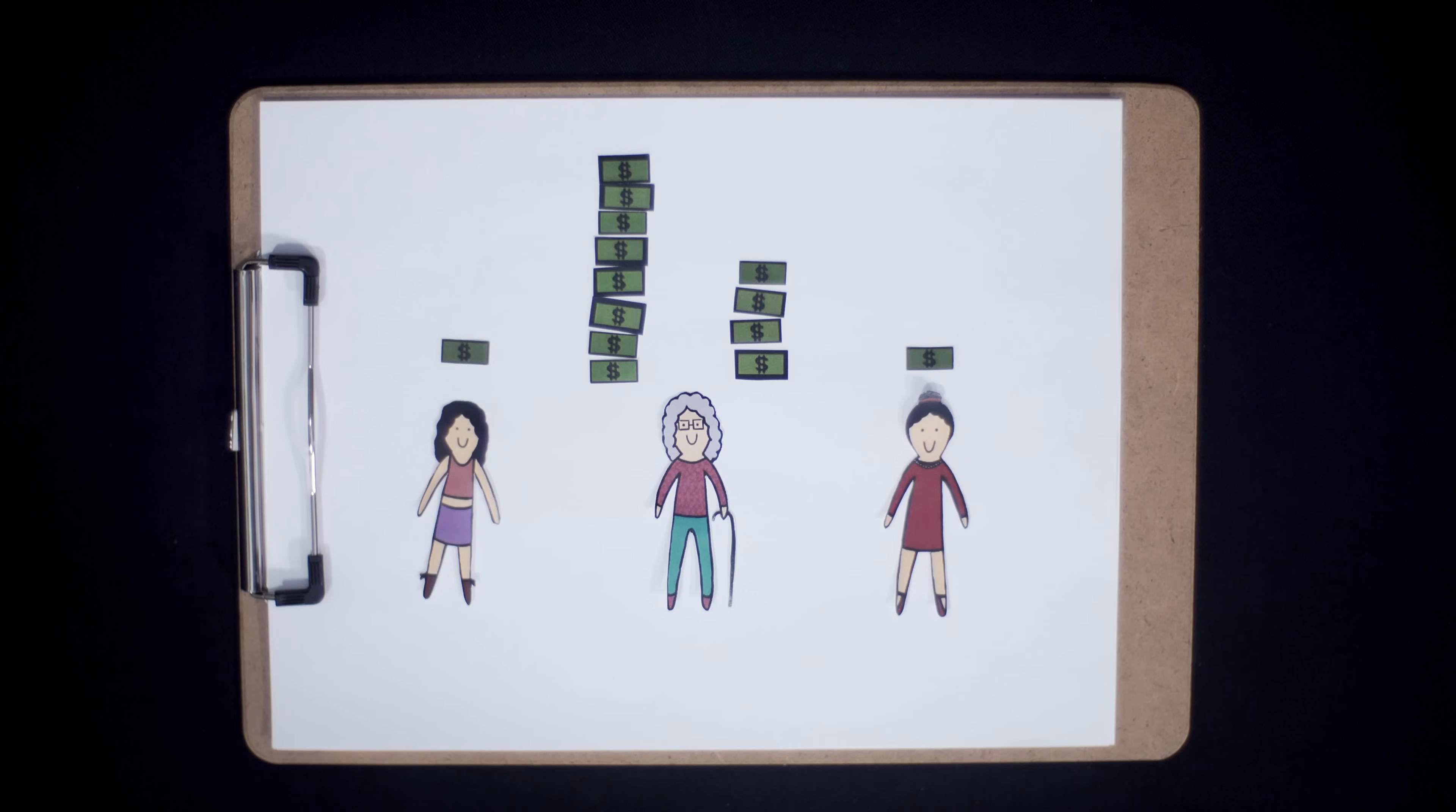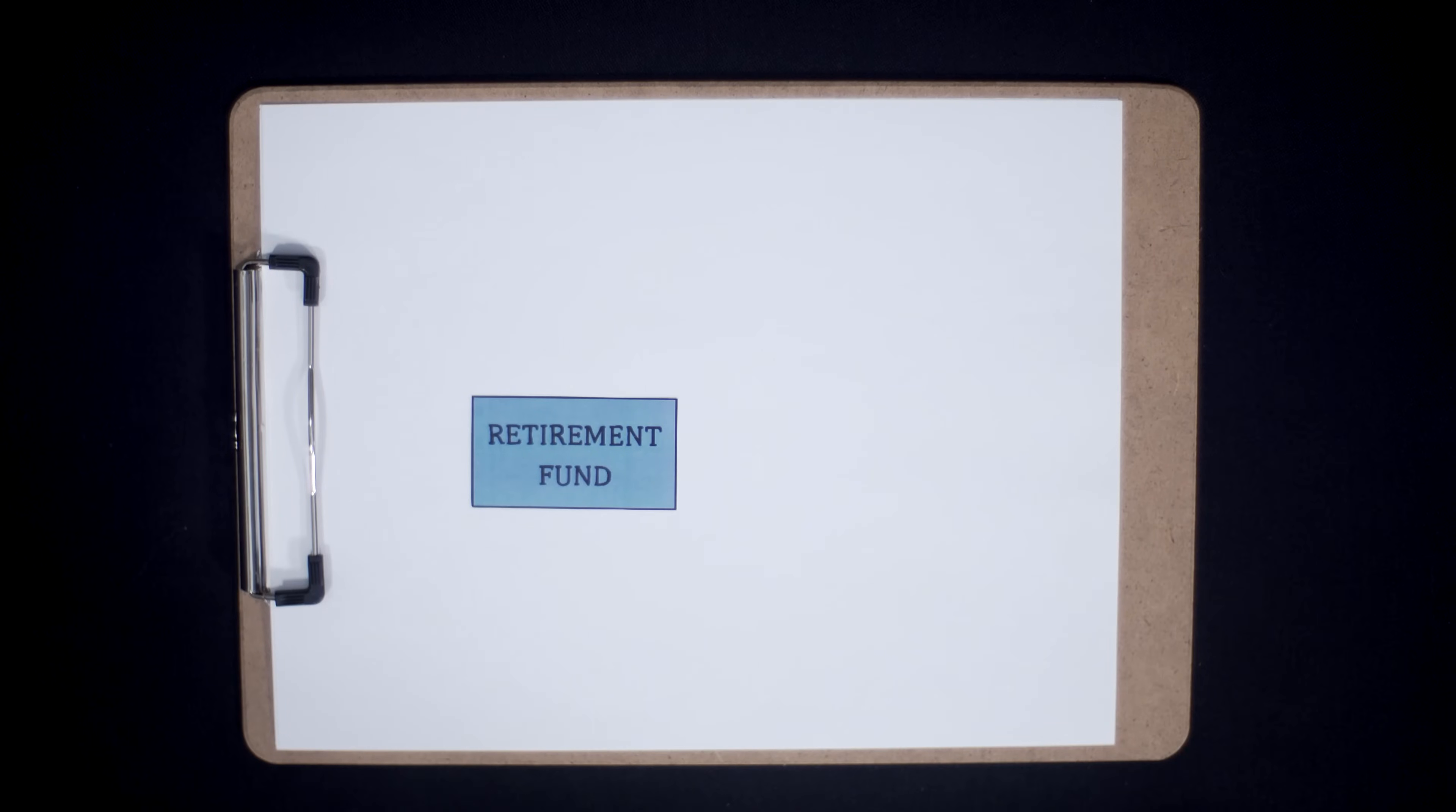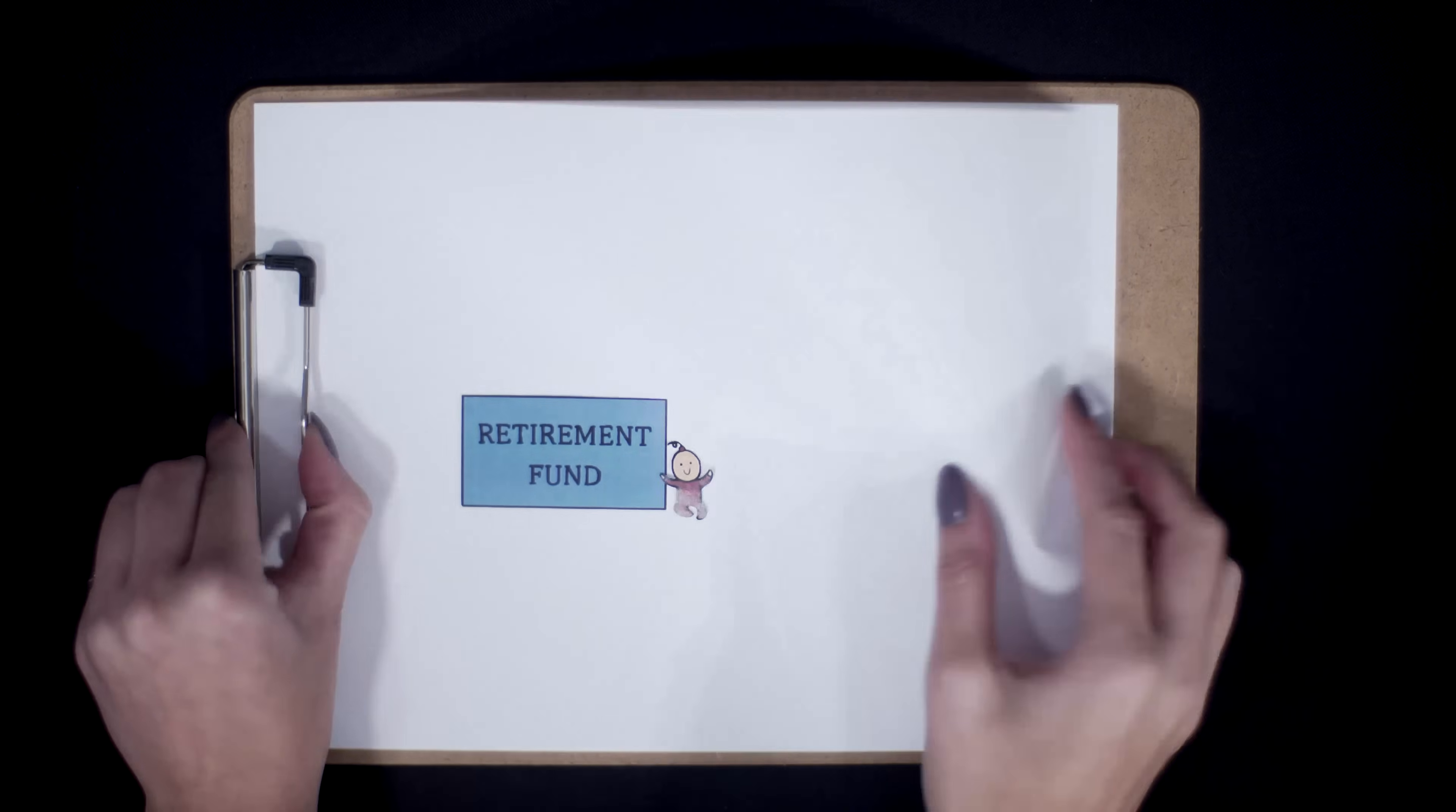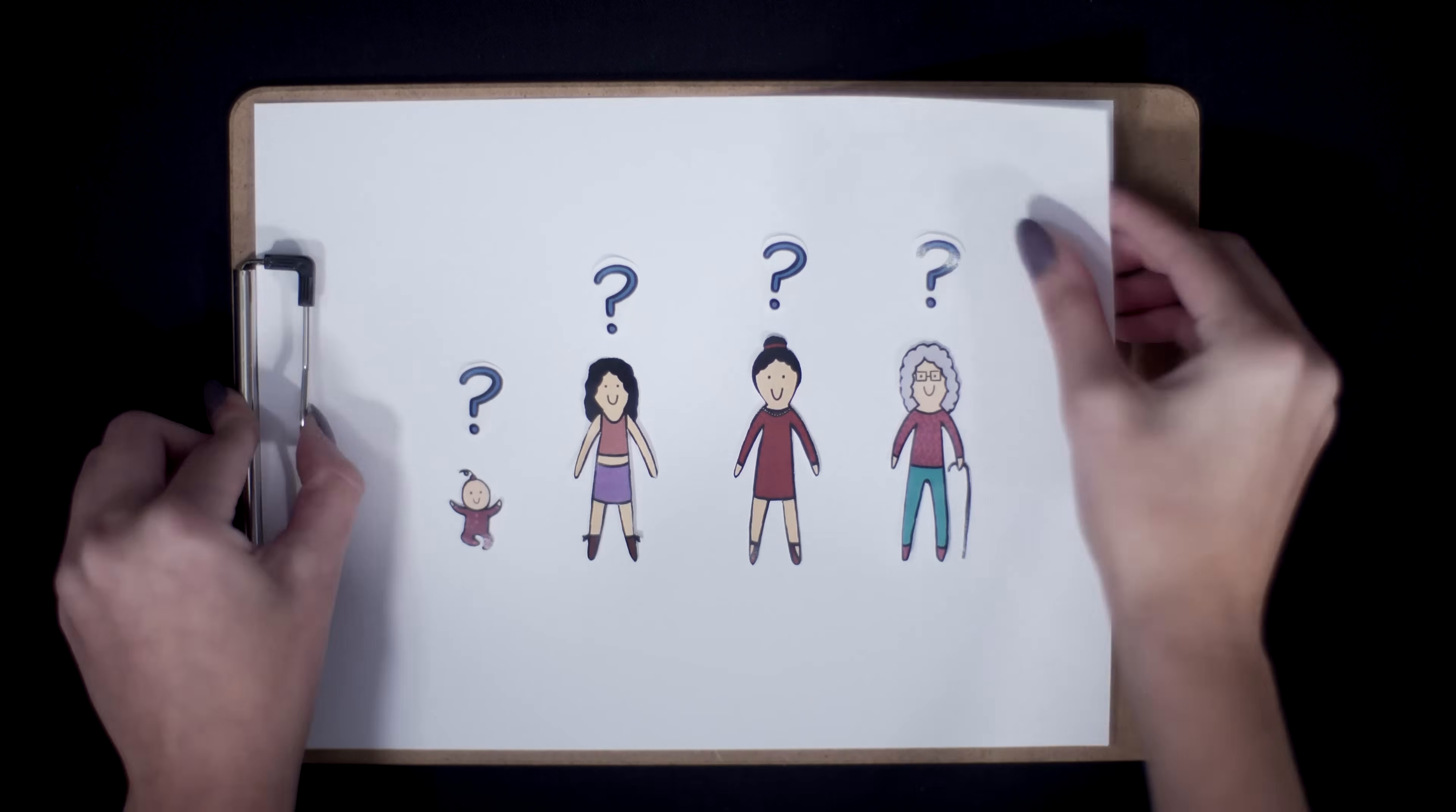But the real takeaway from these two scenarios is not about Meticulous or Myopic Mary. The real takeaway is that you should be saving and investing early and often. And yes, I understand, saving is hard to do. And where should you even save and invest? Fear not, we'll cover some helpful saving tips and details about common retirement plans in future videos.